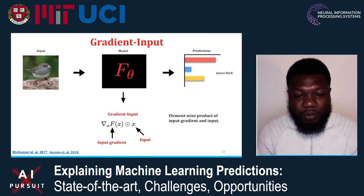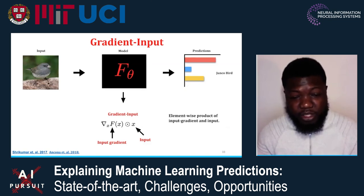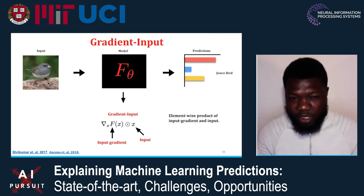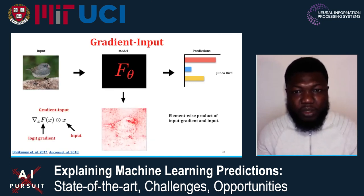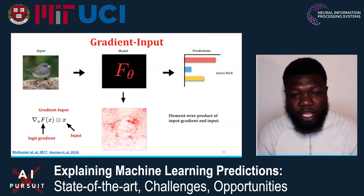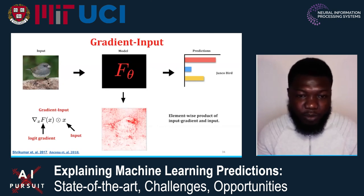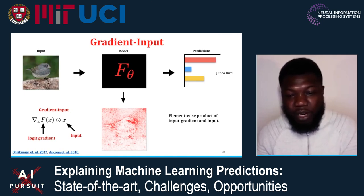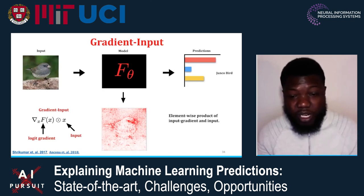Another technique is the gradient element-wise multiplied by the input. This is analogous to the input gradient multiplied by the input that we saw for the linear model. Here's a visualization of gradient element-wise products with the input. One interesting thing is that several other methods have actually been shown to be equivalent under specific settings — for example, for a ReLU network with a zero baseline, the gradient times input is equivalent to certain other approaches.